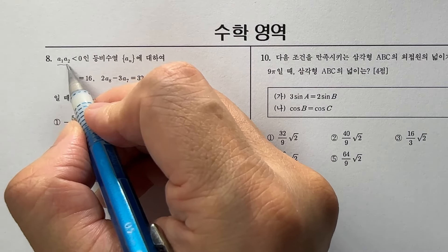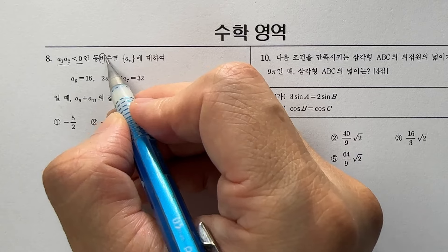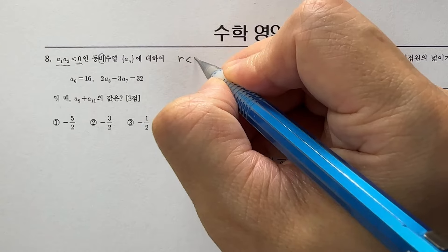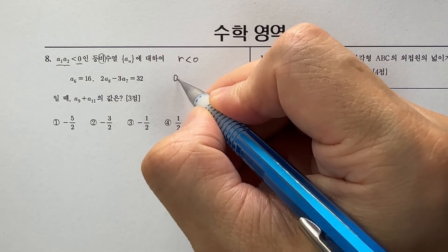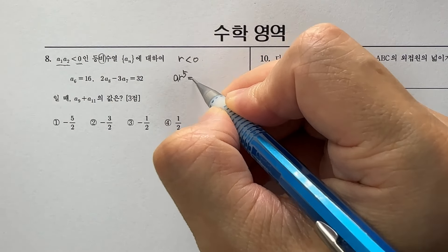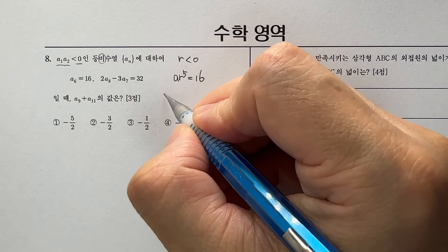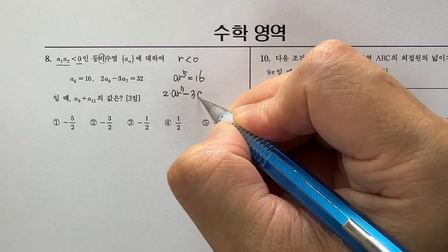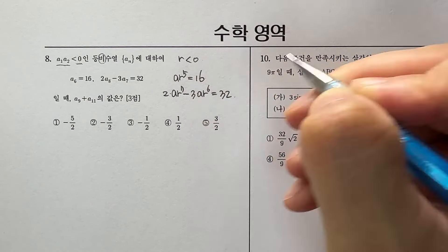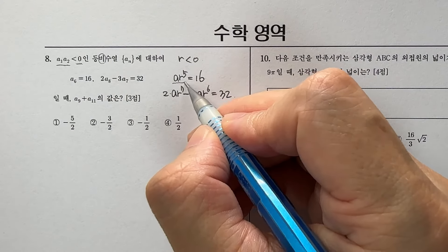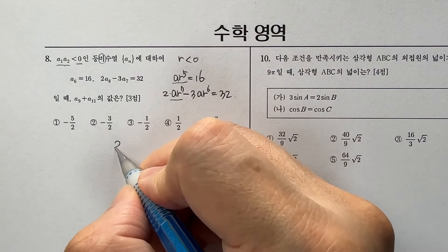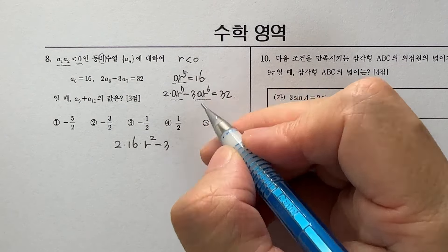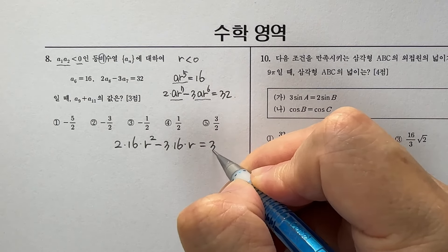첫째 항과 둘째 항의 곱이 음수인 등비수열 문제입니다. 첫째 항과 둘째 항의 부호가 다르다는 것은 공비가 음수라는 얘기죠. 여섯 번째 항은 ar⁵ = 16이고, 2a₈ = 2·ar⁷, -3·a₇ = -3·ar⁶이 되겠죠. ar⁵ = 16이니까 ar⁷ = 16·r², -3·ar⁵ = 16·r = 32가 되죠.